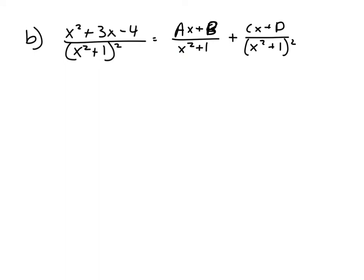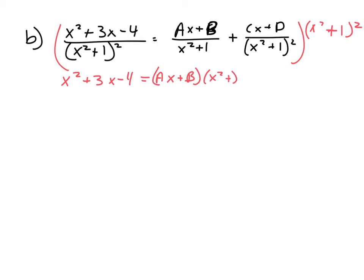Now I need to solve for a, b, c, and d. The first thing I'll do is multiply both sides by x squared plus 1 squared. On the left-hand side I'll just have x squared plus 3x minus 4. One factor cancels on the first term, leaving ax plus b times x squared plus 1, and then the second term's denominator cancels entirely, leaving cx plus d. There's nothing useful I can plug in for x to immediately cancel a factor, so the only approach is to set up and solve a system of linear equations.